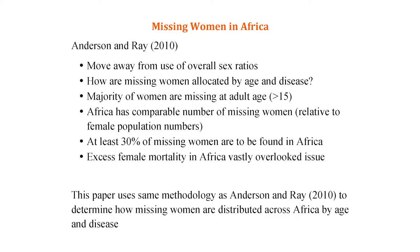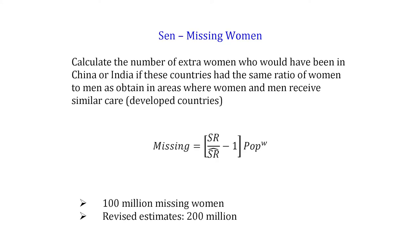So that's where we left that work. What we're doing in this paper is to dig deeper into the African missing women. We're going to use the same methodology and find out how they're distributed across countries and what diseases are responsible. So just to show you the methodology we're using: Sen simply took the sex ratio in a country of interest — say India or China — divided by the sex ratio in developed countries, minus one, times the population of women in the country of interest.